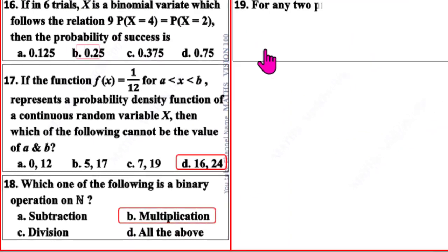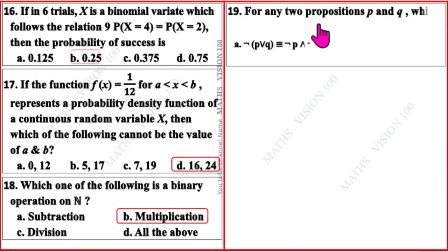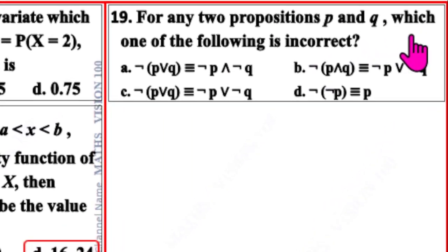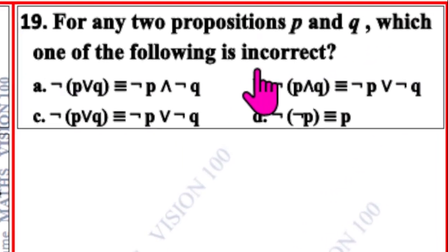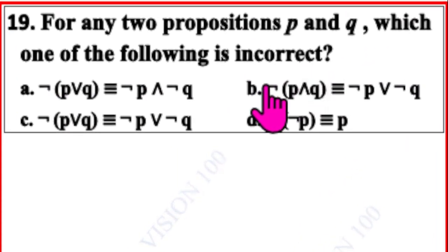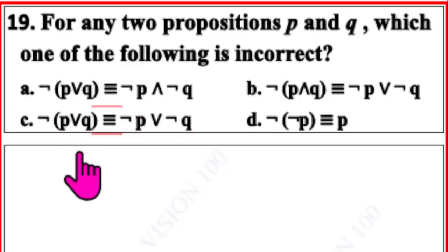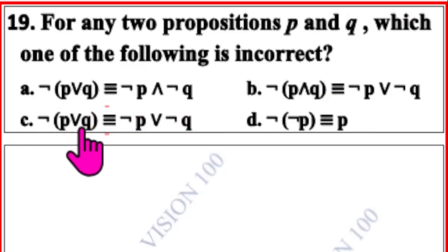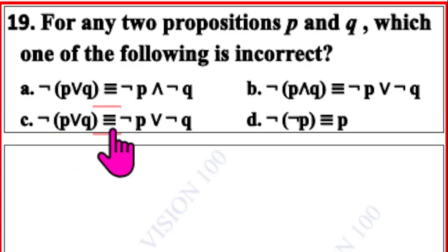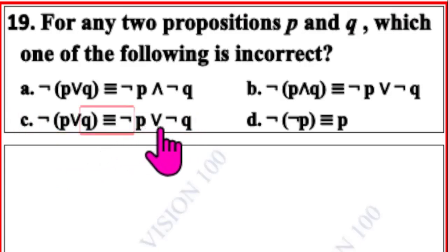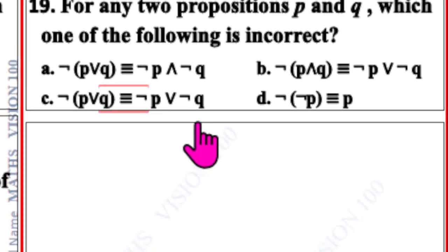Question number 19. For any two propositions p and q, which one of the following is incorrect? Four options are given. The incorrect option is C: negation(p) ∧ q is congruent to negation(p) ∧ negation(q).